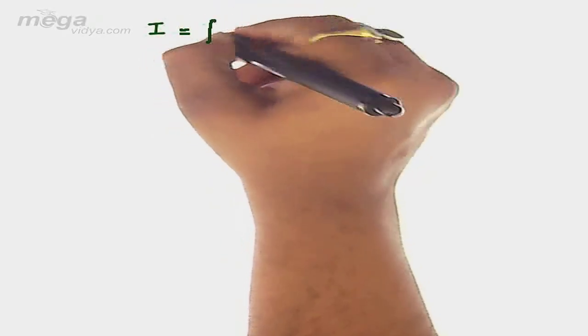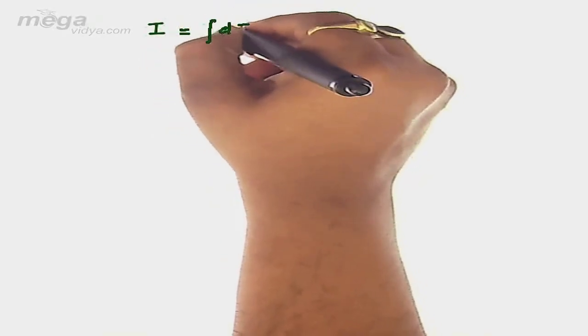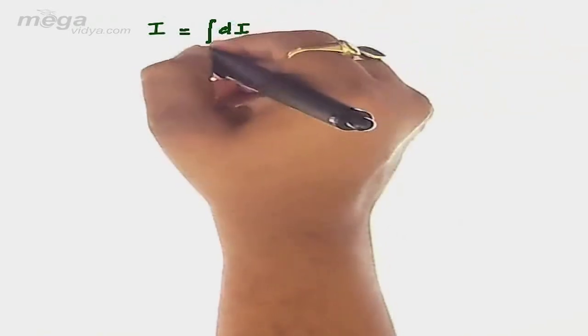The moment of inertia I can be calculated by integrating the elementary moment of inertia dI along the given limits. In this case, we will select limit minus L by 2 to L by 2.